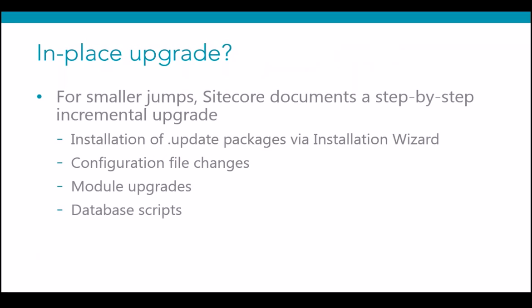There are two ways to approach an upgrade. The first is an in-place upgrade, which may be what most people are familiar with. Sitecore documents a step-by-step incremental upgrade process on SDN — usually a series of steps including an update package installed via Installation Wizard, configuration file updates, module upgrades, and database scripts. This works fairly well for smaller jumps like 7.0 to 7.2 or 6.4 to 6.6.